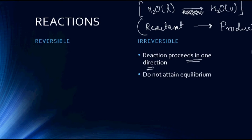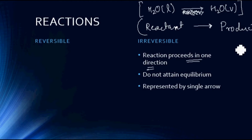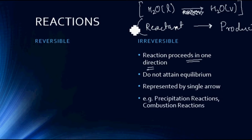The concept of equilibrium, on which the whole chapter is based, can only be observed for reversible reactions. Irreversible reactions, which you have studied up till now, will not be the focus of this chapter — this chapter will basically focus on reversible reactions. Irreversible reactions are represented by a single arrow, which you have been using since your junior classes, so there is nothing new here.